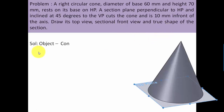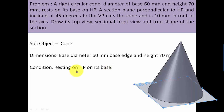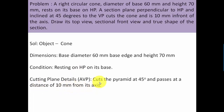The object is a cone with base diameter 60 millimeters and axis length 70 millimeters. The condition given is that it rests on HP on its base. If the cone is resting with its circular base on HP, then the true shape of its base can only be seen from the top, and hence you have to begin by making the top view first, and accordingly the front view is going to be made.